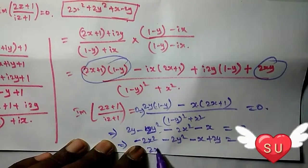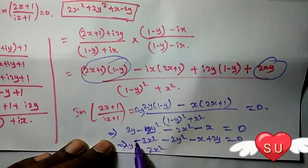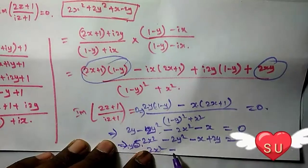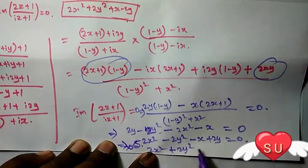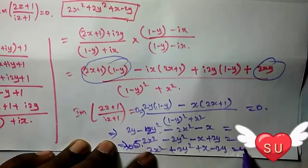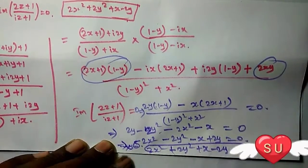Multiplying through by -1 to get the final form: 2x² + 2y² + x - 2y = 0. This is the required locus equation.